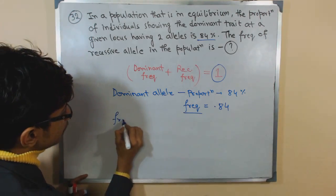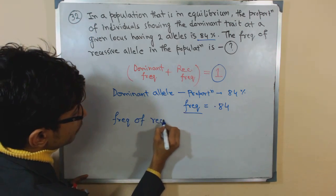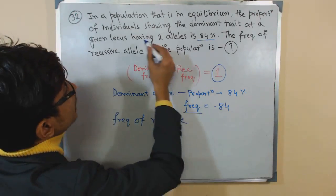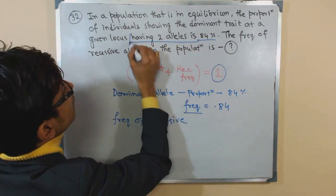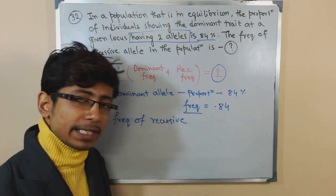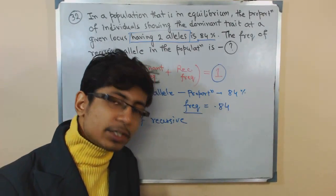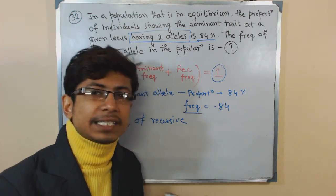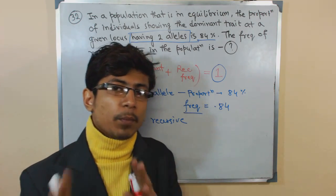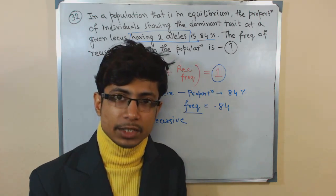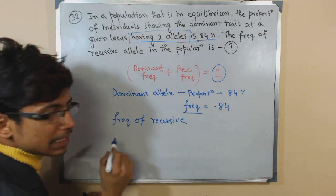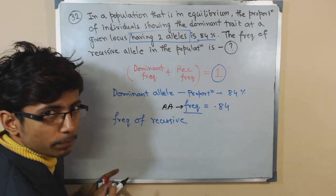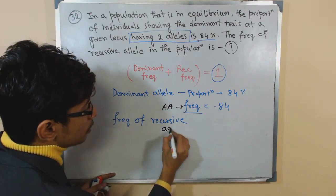They are telling us the dominant trait at a given locus having two alleles — meaning both alleles at that locus are dominant. When both alleles are dominant at a particular locus, we call it homozygous dominant. So if we represent it as capital A, we get AA, and the frequency of AA is 0.84.